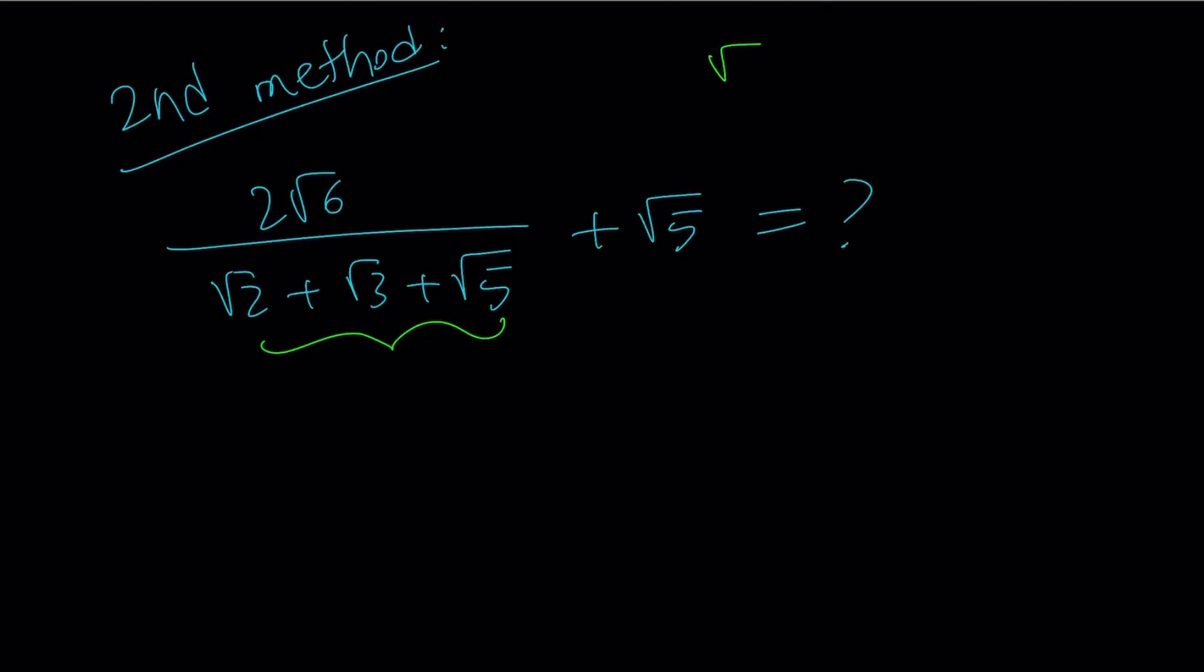But there are three terms. If I have square root of x plus square root of y in the denominator, I do know that I need to multiply by root x minus root y, right? So that is what I need to do. But when there are three terms, I kind of have to group two of the terms together.